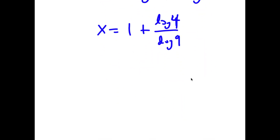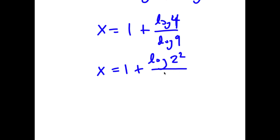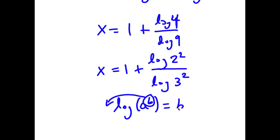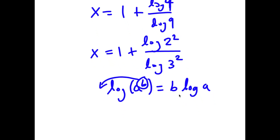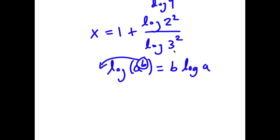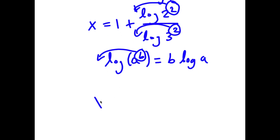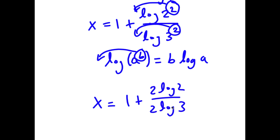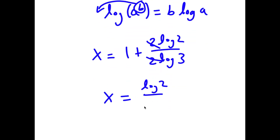Now I can rewrite log 4 as log of 2 squared, and I can rewrite log 9 as log of 3 squared. Remember, if I have something in the form log of a to the power of b, I can move b to the front, so this equals b times log a. So I move 2 to the front for both, giving x is equal to 1 plus 2 log 2 over 2 log 3. Canceling the 2s, I get x is equal to log 2 over log 3.